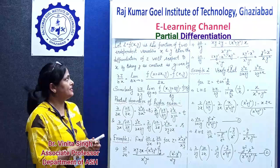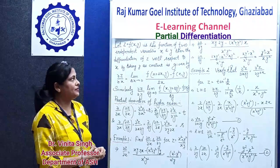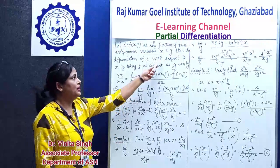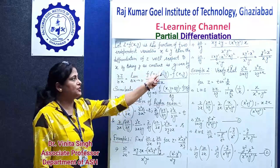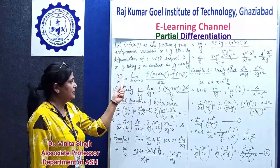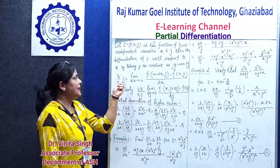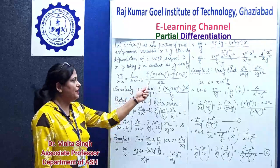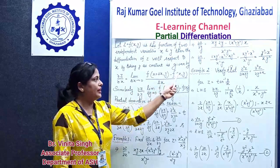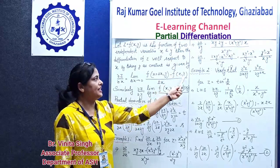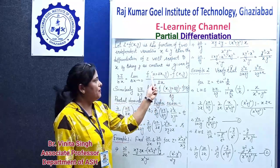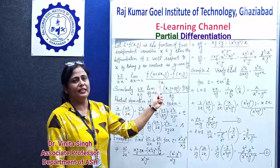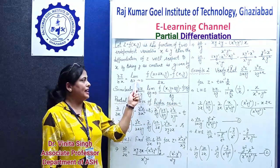Basically the definition is this: when z is a function of x and y and you have to differentiate z with respect to x, then you take y as constant. The mathematical expression is: ∂z/∂x = limit as Δx tends to 0. The variation is in x and y is taken as constant: [f(x + Δx, y) − f(x, y)] / Δx, where Δx approaches 0.